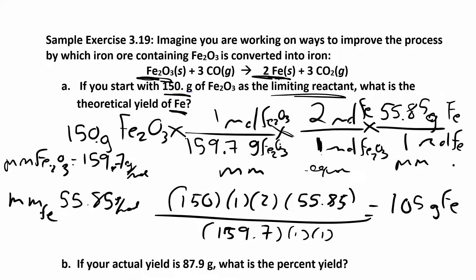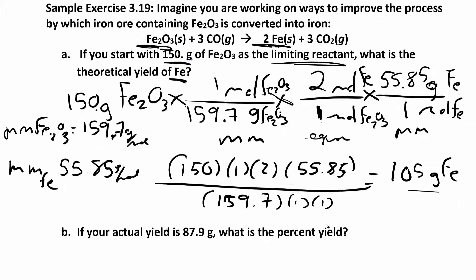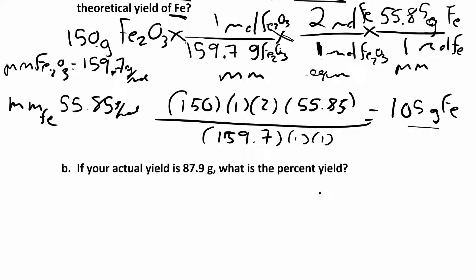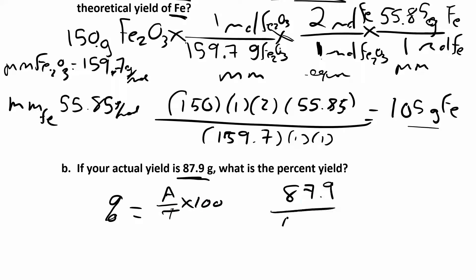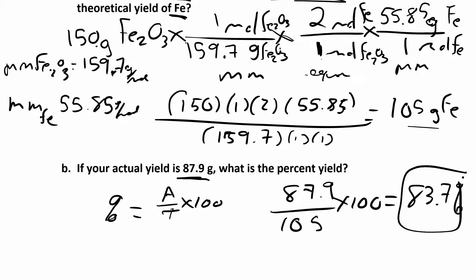Take a minute to work through that. What we just calculated is the theoretical yield — whenever you find products using the chemical equation and stoichiometry, that's in theory how much you should get. Now suppose in part B you actually do the reaction and your actual yield is only 87.9 grams. The percent yield is actual over theoretical times 100: 87.9 ÷ 105 × 100 = 83.7%. That's your percent yield, and that's the end of this chapter.